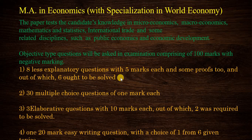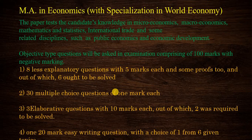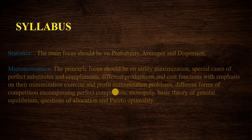There will be eight explanatory questions worth five marks each, some proofs, thirty multiple choice questions of one mark each — with minus half mark for a wrong answer — three elaborate questions, and one twenty-mark essay writing question. For the essay you will be given six possible options to choose from.